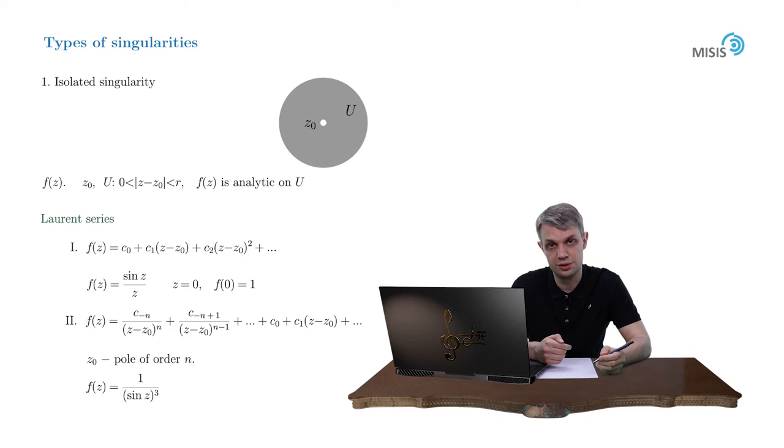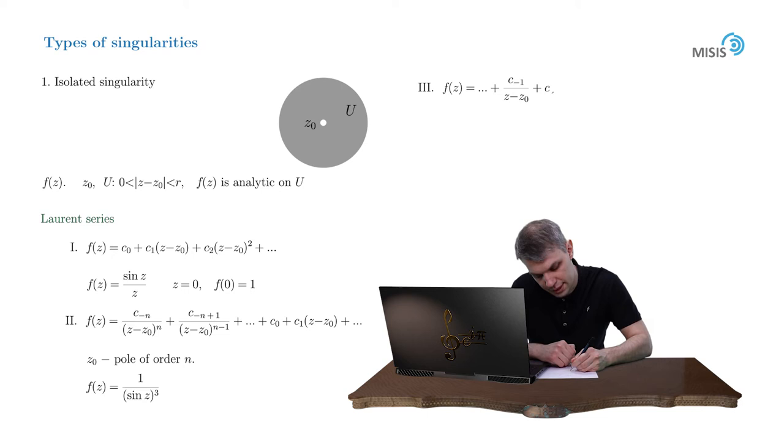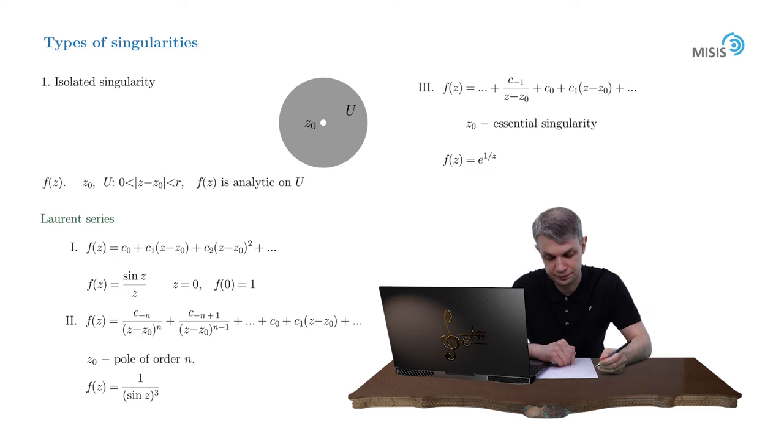Finally, the third case is when our function has a Laurent expansion with infinite amount of negative power terms. We write f(z) = ... + c_{-1}/(z - z0) + c0 + c1(z - z0) + ... In this case z0 is called an essential singularity. A typical example would be f(z) = e^{1/z}. If we build a Laurent expansion of this function in the vicinity of zero, we will obtain infinite amount of negative powers.